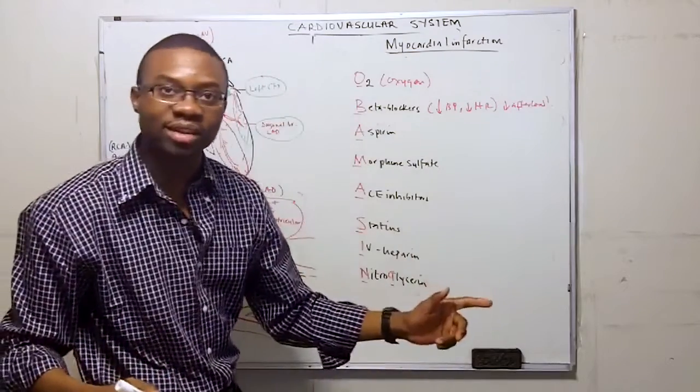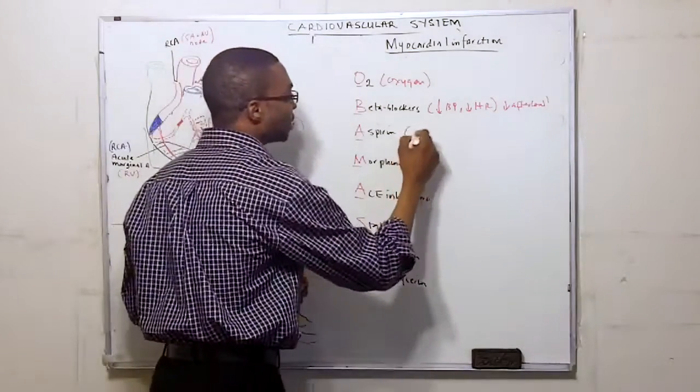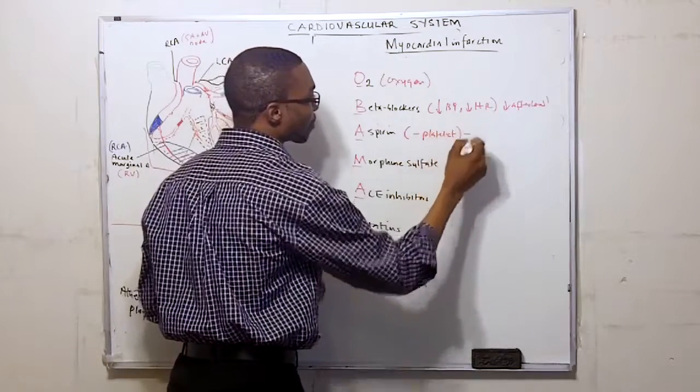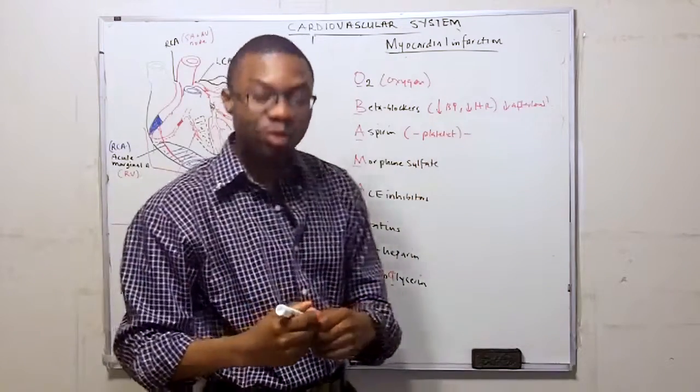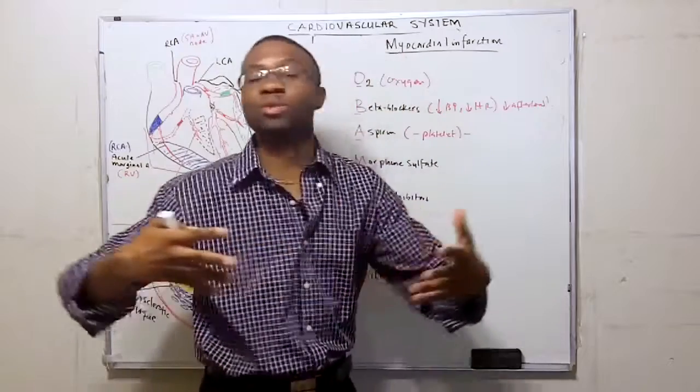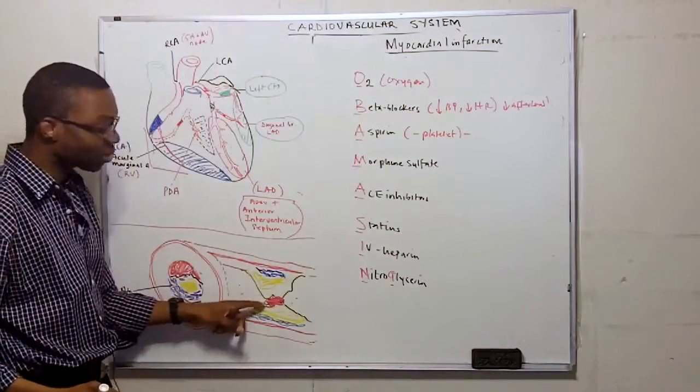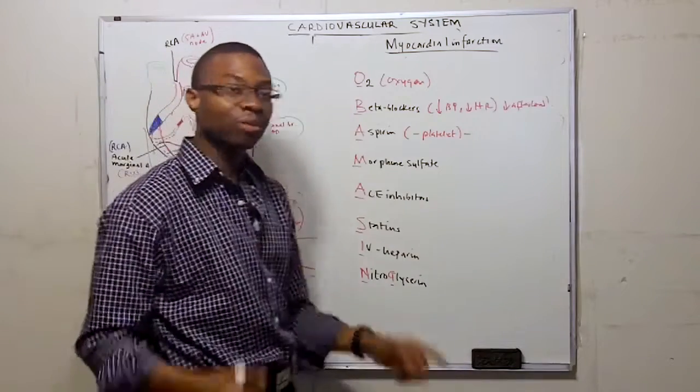You want to give them aspirin. Aspirin is an anti-platelet that decreases thromboxane A2 and decreases ADP. You don't want the platelets to be aggregating. The last thing you want is the little pipe that's already clogged up to keep clogging up.